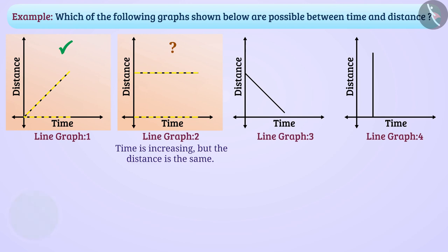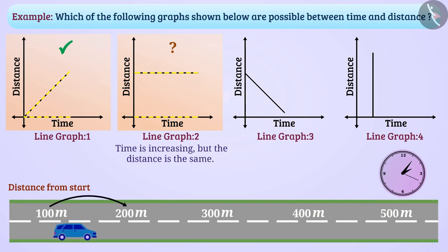Let me tell you, yes, such a situation is possible if, during the journey, the car stopped somewhere before reaching the last place. So, in such a situation, time will increase but distance travelled will remain the same. Hence, line graph 2 can be a distance-time graph.